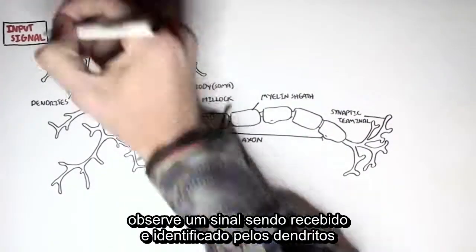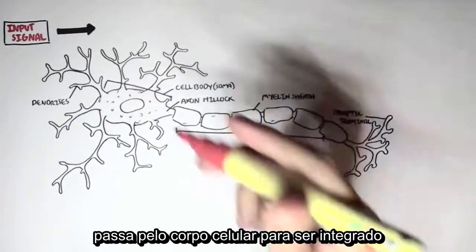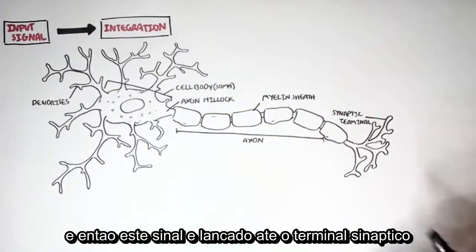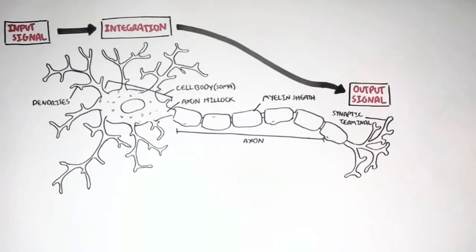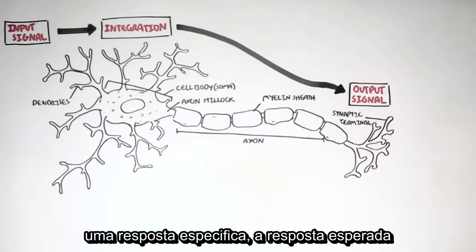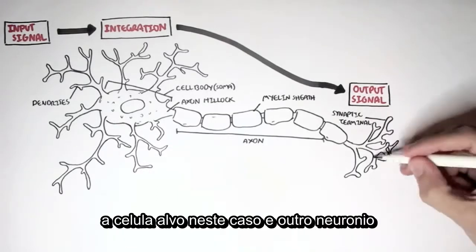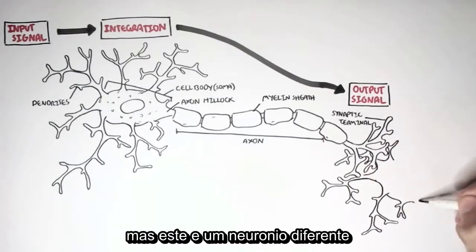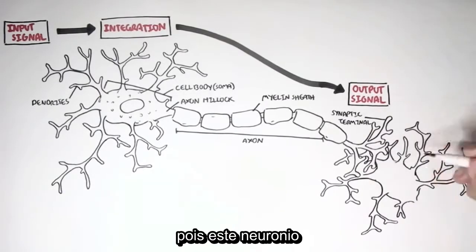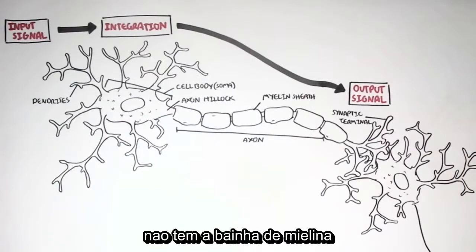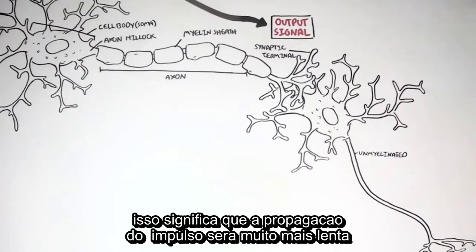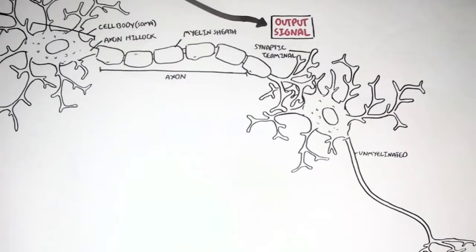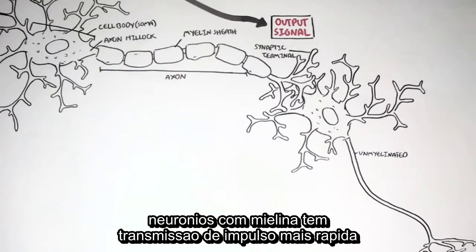An input signal is received by the dendrites, gets passed on to the cell body for integration, and then the output signal is released from the synaptic terminal to a target cell for a specific response, a desired effect response. The target cell, in this case, is another neuron — an unmyelinated neuron. It has no myelin sheath wrapping around it, which means the propagation of the impulse along the axon is much slower. When you have a neuron with myelin sheath, the impulse travels much faster.